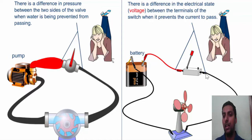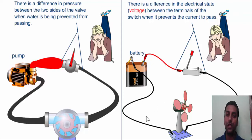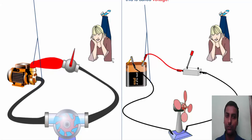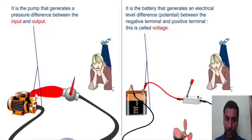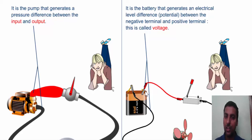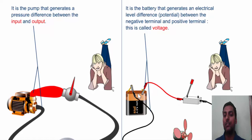That difference in electrical states across the switch is called potential difference. Now when we start the supply, the pump has two sides — input and output — and it is the pump that generates the pressure difference between them. Similarly, it is the battery that generates an electrical level difference — that is, the potential difference between its positive and negative terminals. A battery has a positive and a negative end, and the difference in their concentration levels of charges gives rise to the potential difference levels.